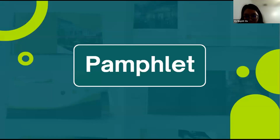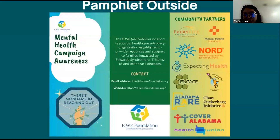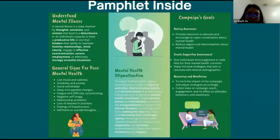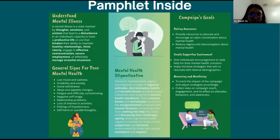This is the pamphlet section. The outside part of the pamphlet includes the organization's information as well as their contact information, and I also included some of the organization's community partners. For the content inside of the pamphlet, starting from the left side, I included some definitions of mental health illness as well as signs that can indicate that a person has poor mental health. The middle section is where I talk about mental health stigma and how it can be a barrier that prevents a person from seeking help. And finally, the right side is where I include the campaign's main goals.